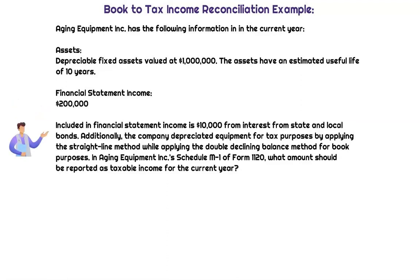Included in the financial statement income is $10,000 from interest from state and local bonds. The company depreciated equipment for tax purposes using the straight-line method, and applied the double declining balance method for book purposes. We want to know what amount would be reported as taxable income in the current year.